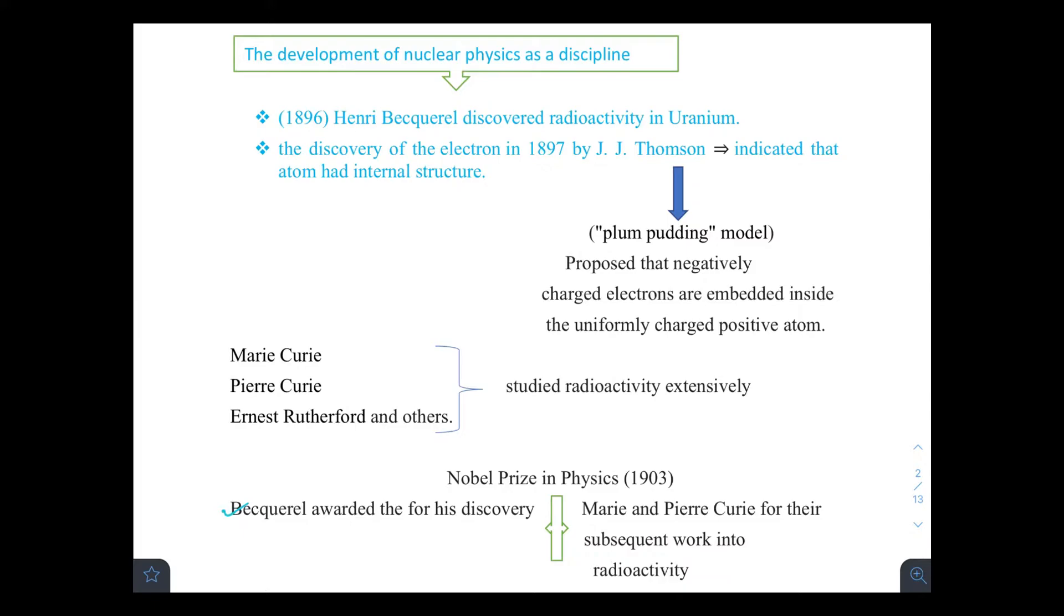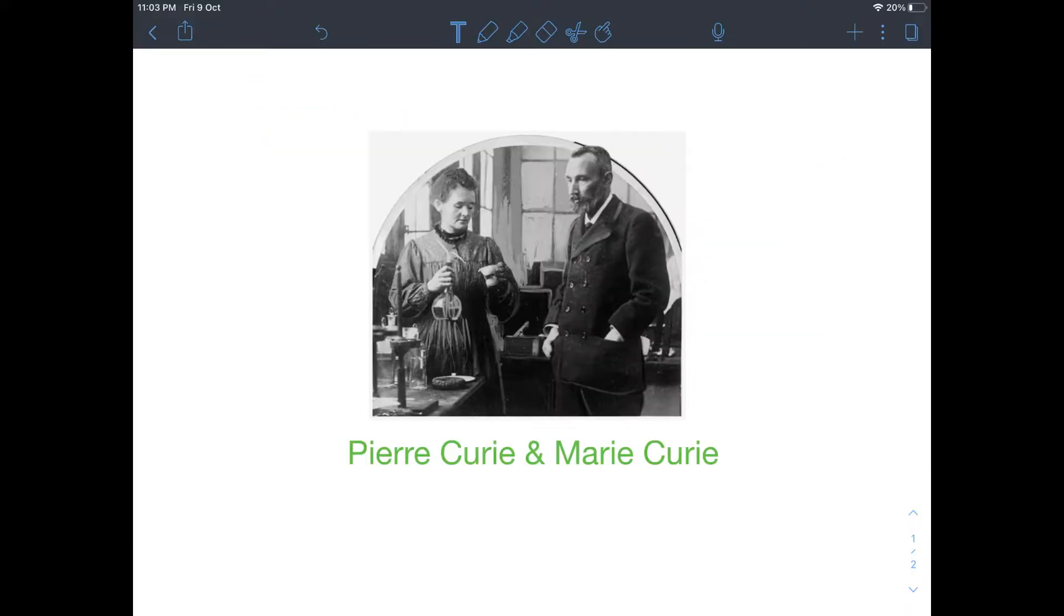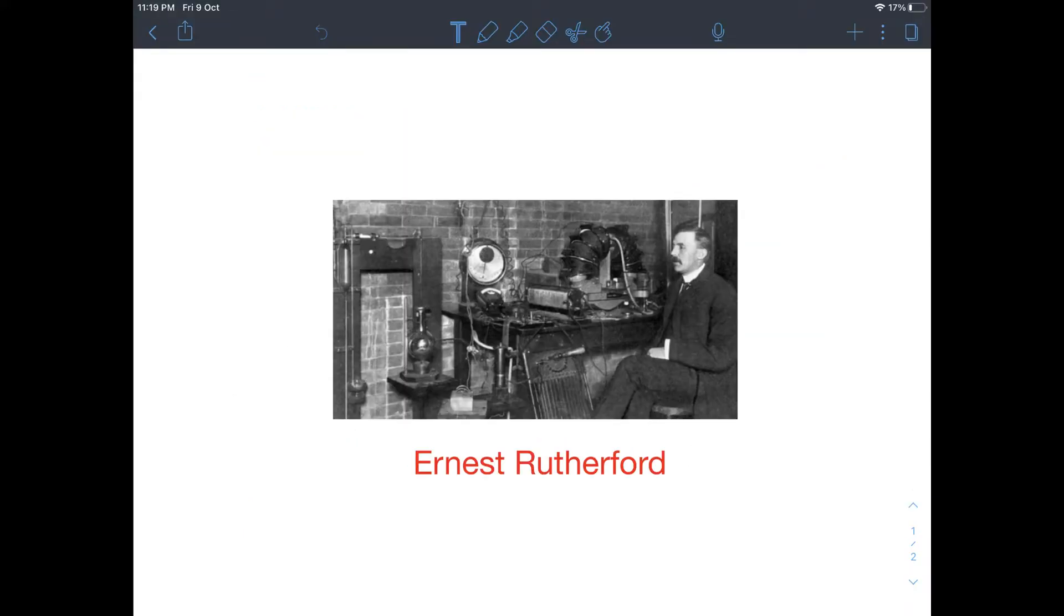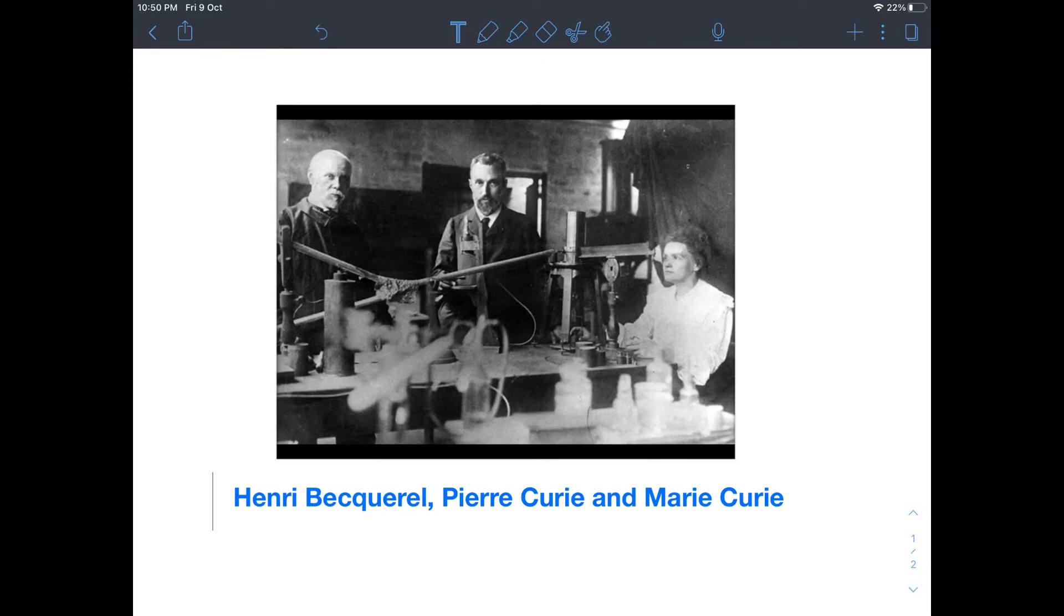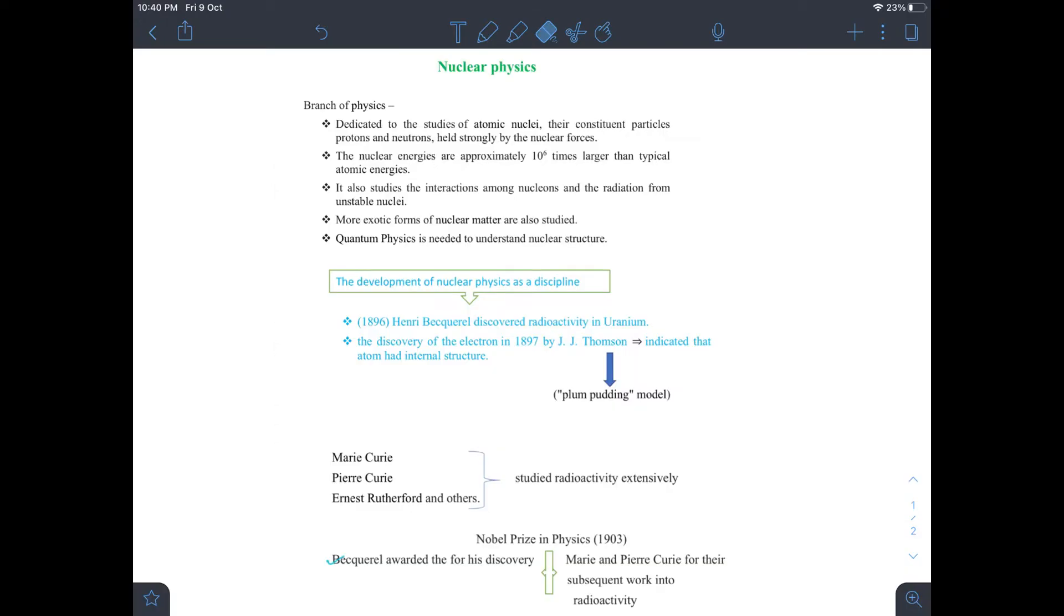The radioactivity was extensively studied by Marie Curie, Pierre Curie, and Rutherford. In 1903, the Nobel Prize for Physics was shared by Becquerel for his discovery of radioactivity in uranium salt with Marie and Pierre Curie for their subsequent work in radioactivity.